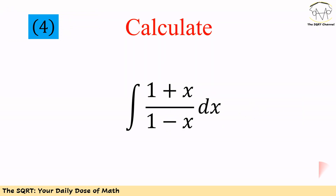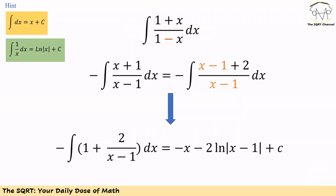Now let's move to the fourth problem. Here we want to find the integral of 1 plus x over 1 minus x dx. To solve this, we are going to factor out negative 1 first and then write x plus 1 as x minus 1 plus 2. We will see that x minus 1 is common with the denominator, so the whole integral is going to be the negative of the integral of 1 plus 2 over x minus 1 dx.